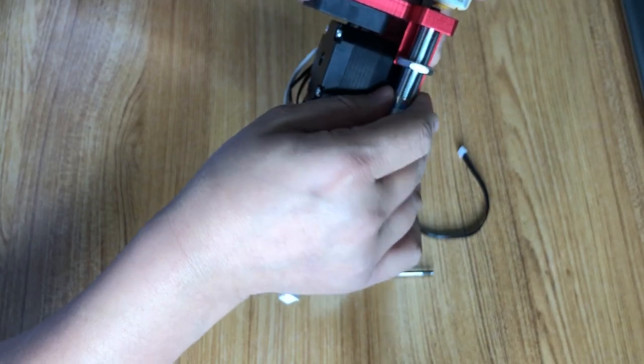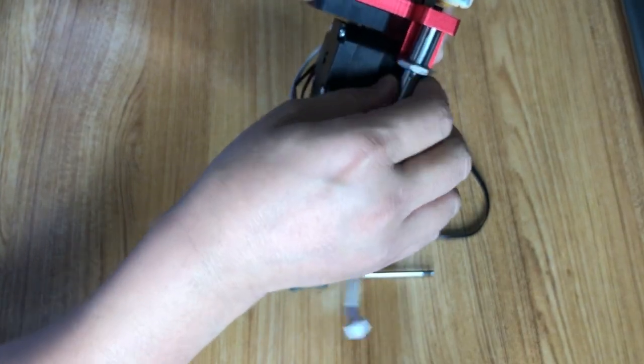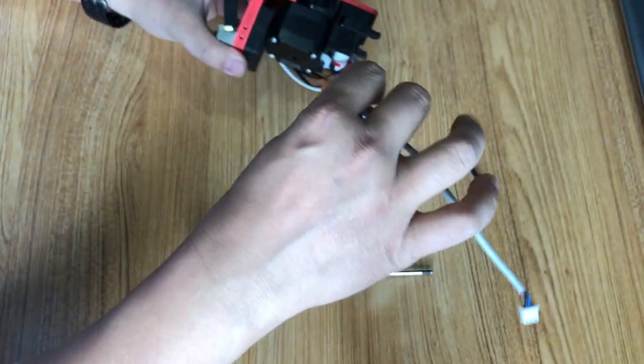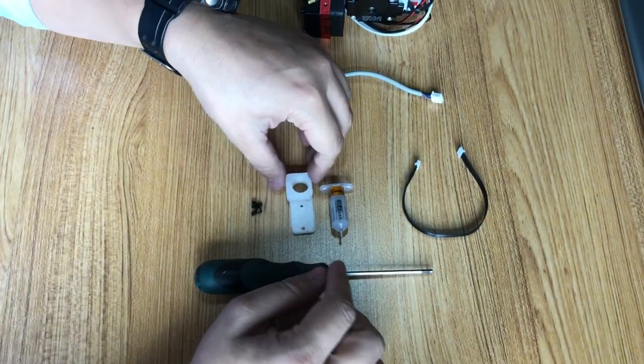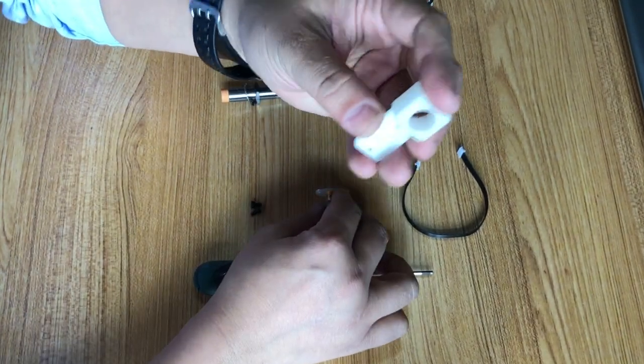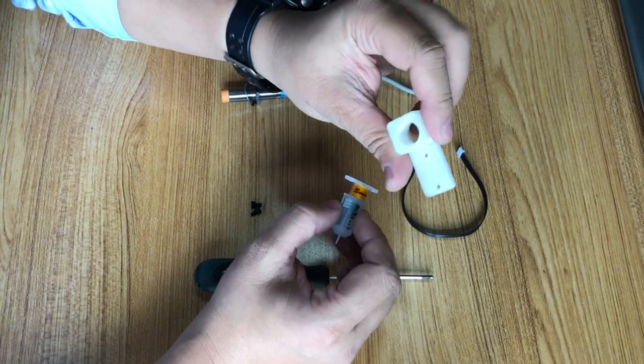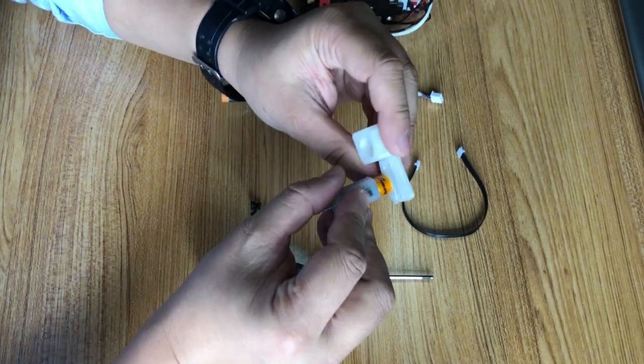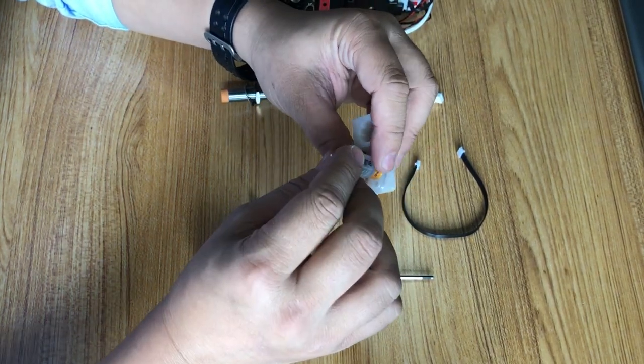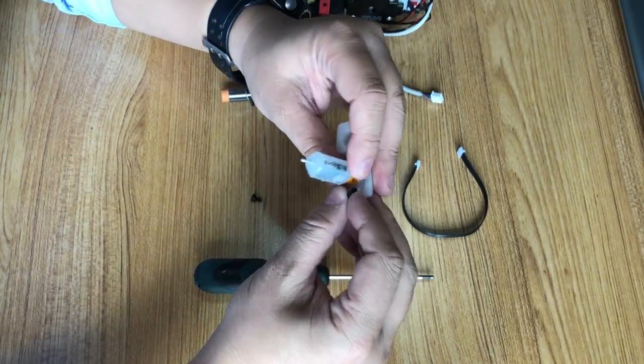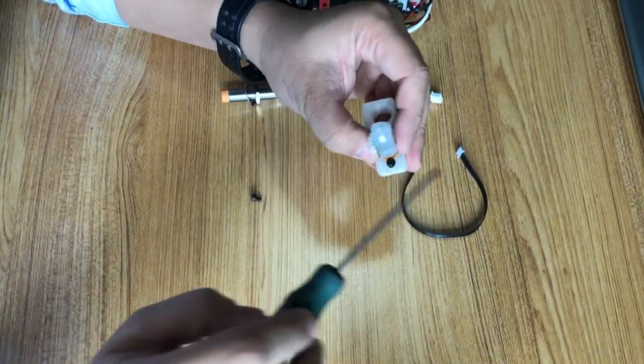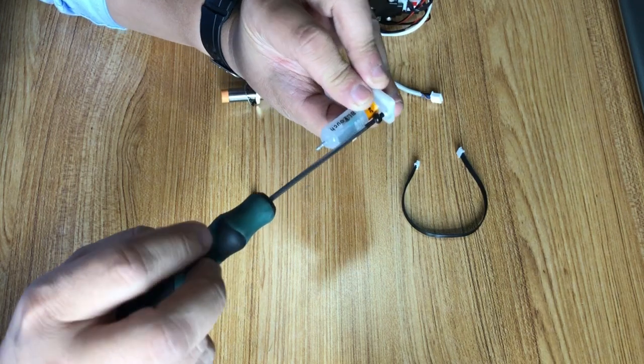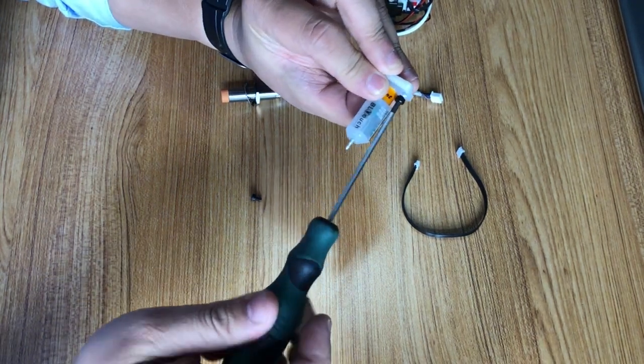We will use this inductive sensor as a screw to lock the interchange bar. First, mount this onto the interchange bar. There are two M3 by 5 millimeter screws, so tighten it.